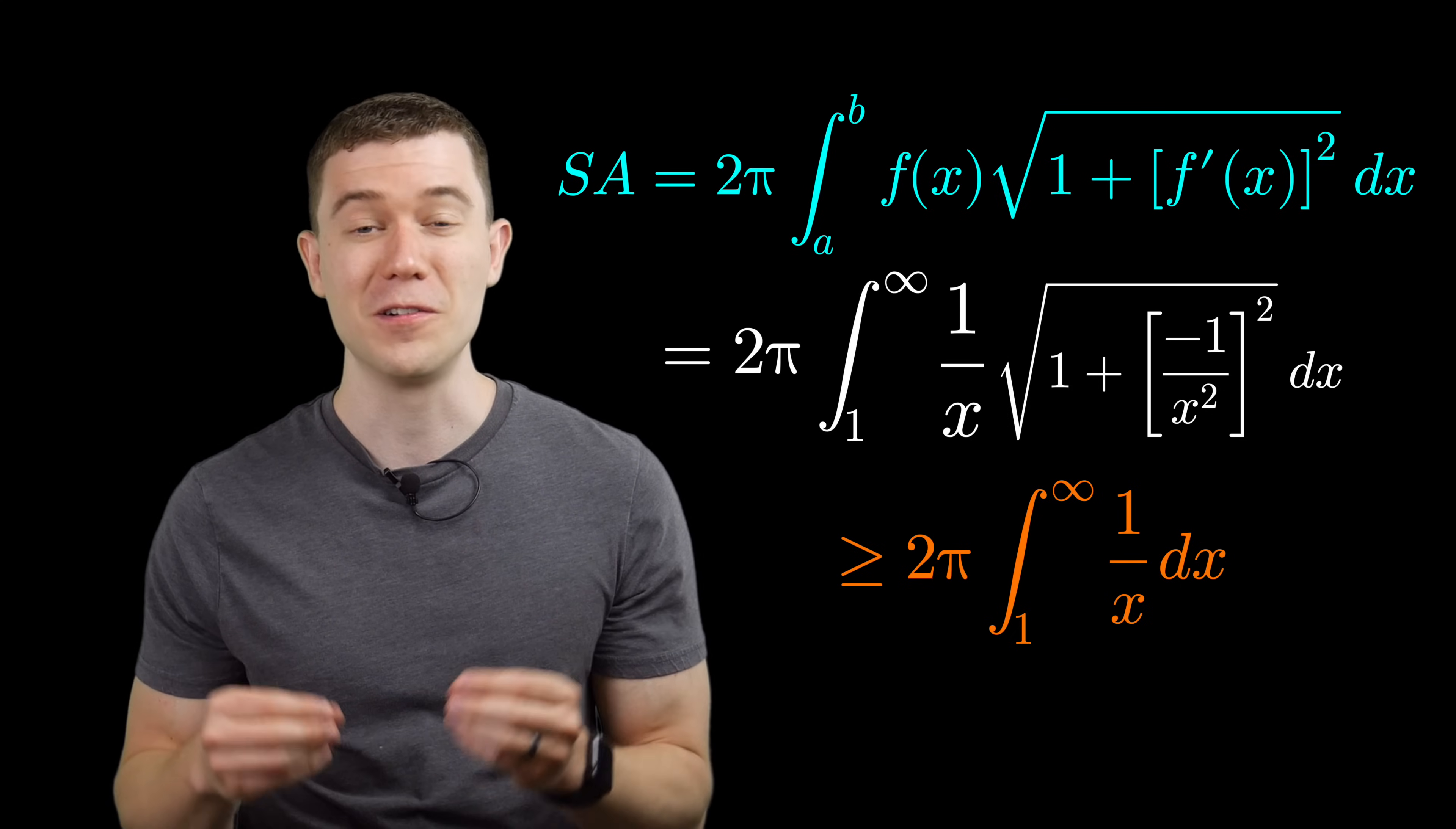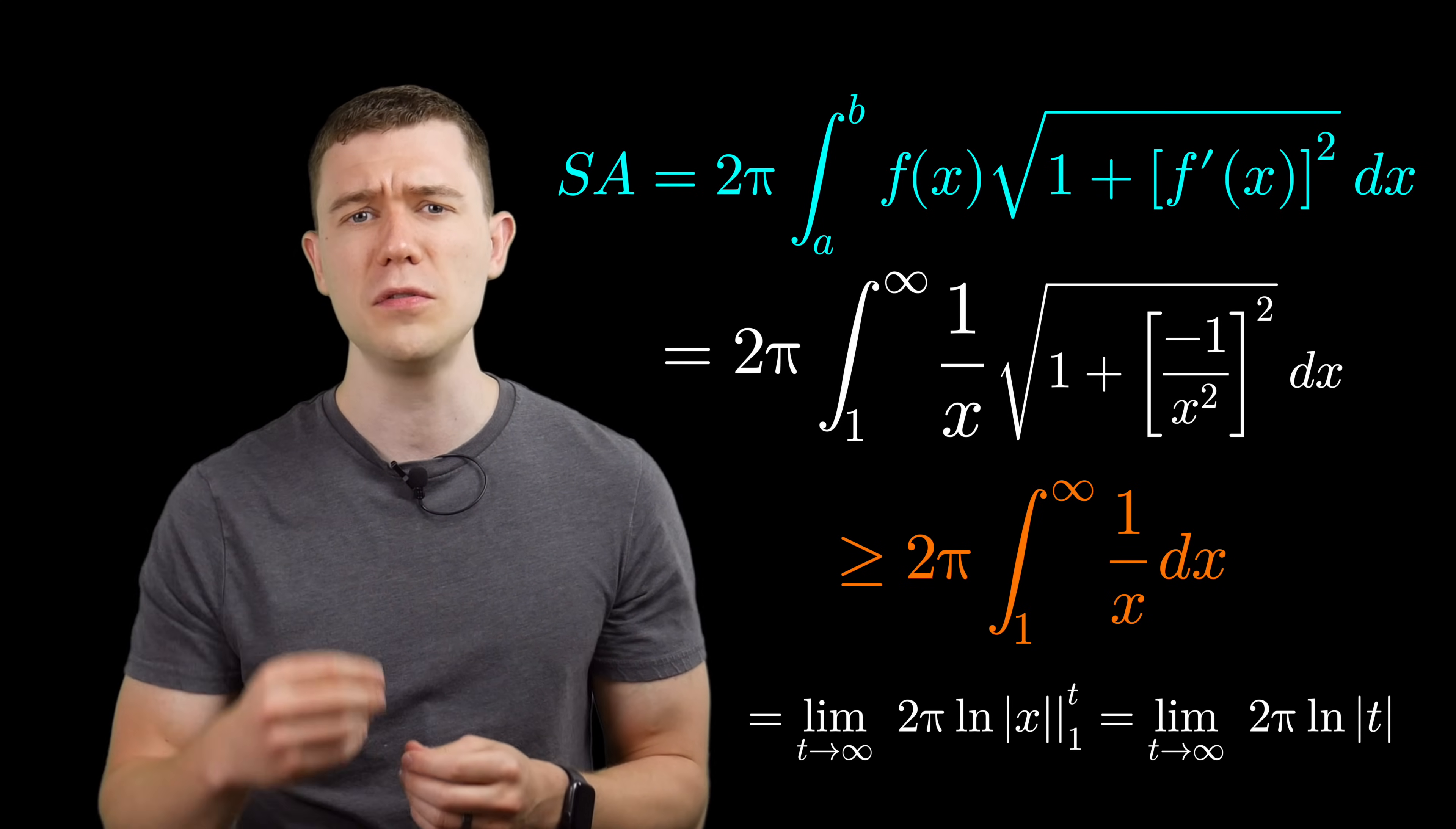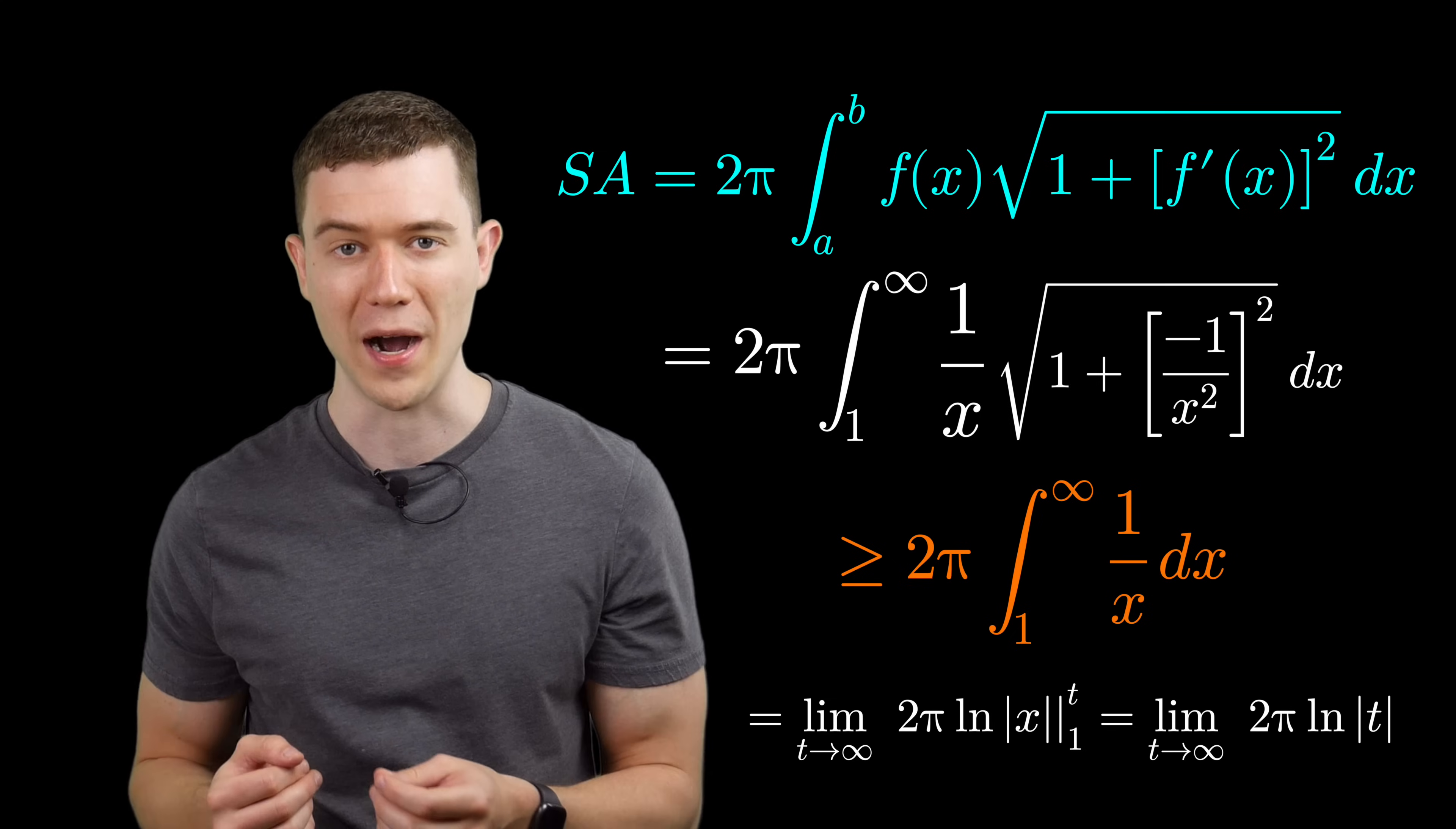Fortunately, this definite integral is easier to compute. The antiderivative here will just be natural log x. Again, use the fundamental theorem of calculus. Substitute the constant minus substitute one. Natural log of one is zero. And we have that two pi attached.